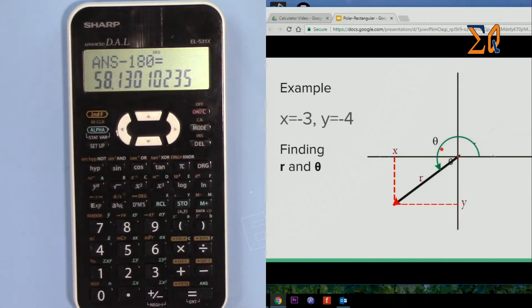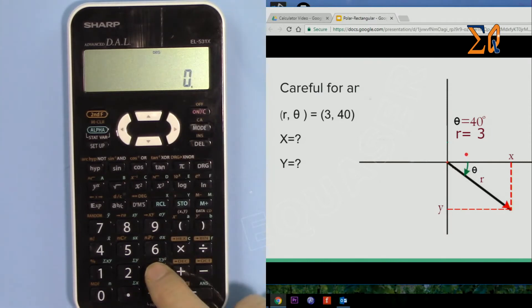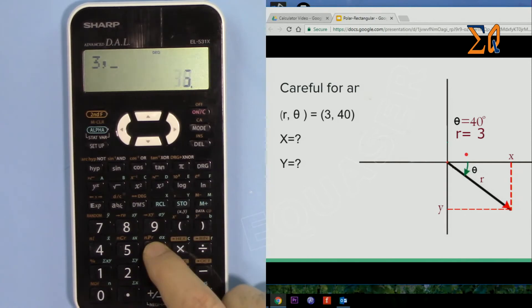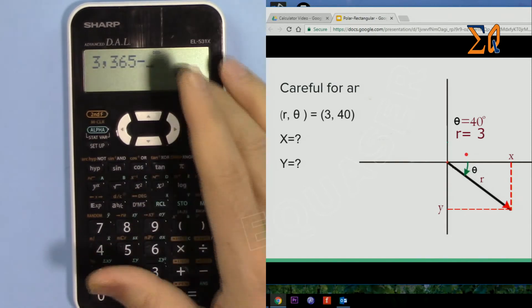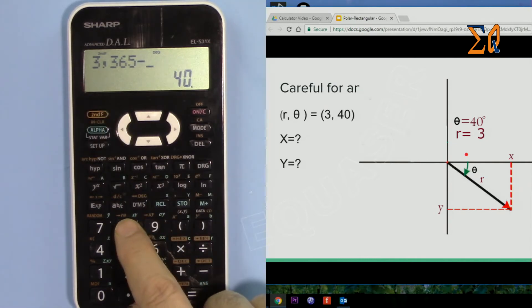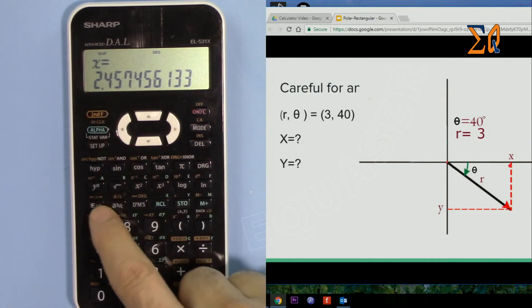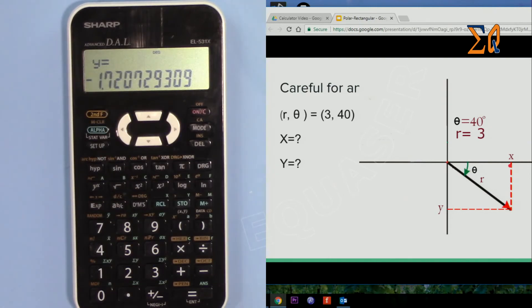For this one, r is 3 and theta is 40. We want to find X and Y. So we have to calculate 365 minus 40. So 3, second function, comma, 365 minus 40. I'm just doing it in line at the same time. And then second function, just press X and Y. So it says X is 2.4. And then for Y, second function, here - minus 1.7. That's it.